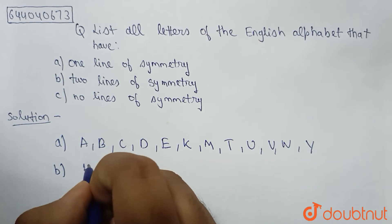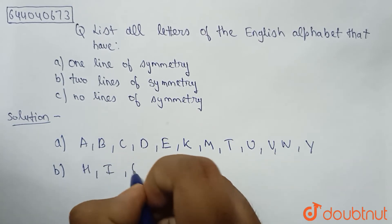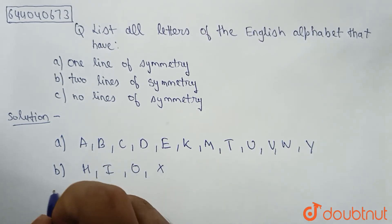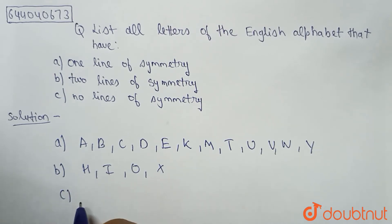The letters of English alphabet which have two lines of symmetry are H, I, O, and X.